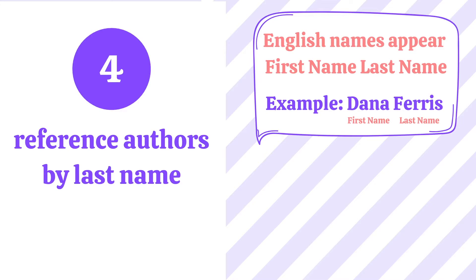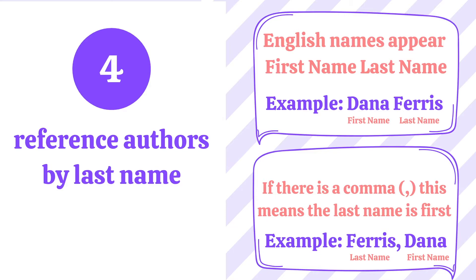So let me help you. English names appear first name, last name. So in the example of Dana Ferris, Dana is the first name and Ferris is the last name. But if you see an author's name with a comma, then this means the last name is first. So in the example Ferris comma Dana, Ferris is the last name and Dana is the first name.